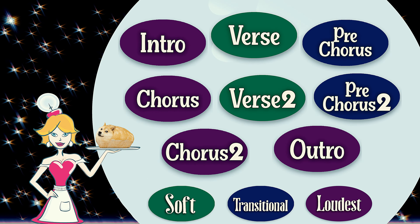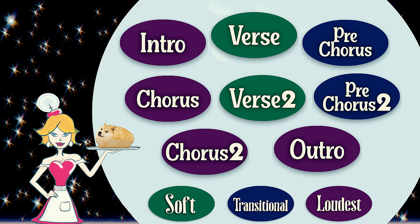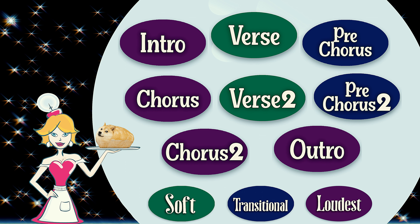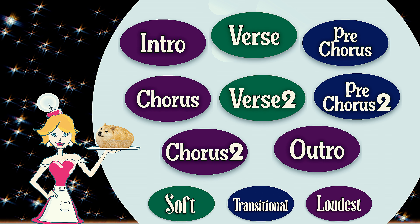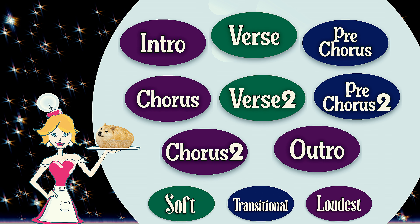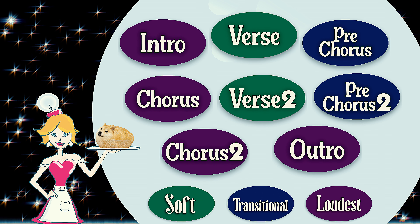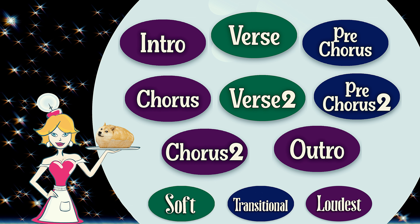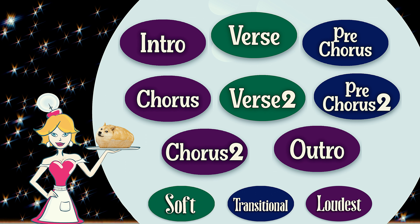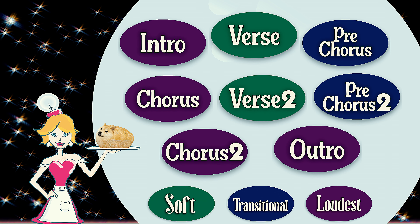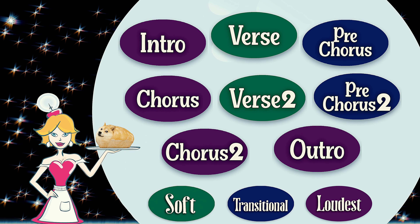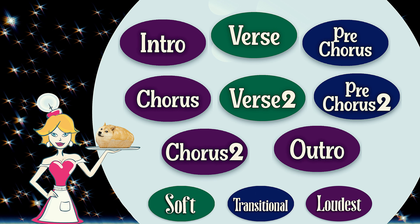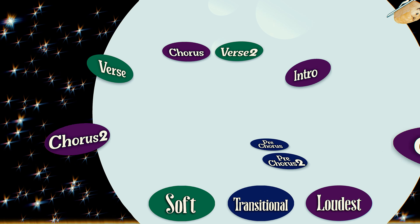So here we have a layout of the different sections from our example song. We have purple for the loudest, blue for transitional or secondary loudest, and green for the most quiet and calm. You'll see that this follows the classic blueprint widely popularized in the 90s with loud intros and choruses, counterbalanced with quieter, sparser verses.